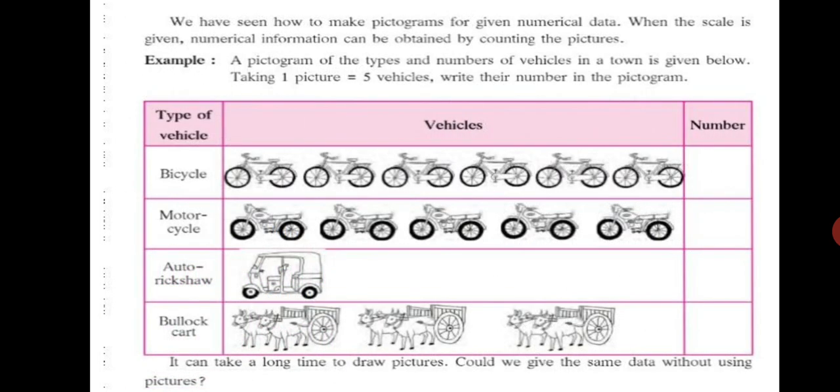We have seen how to make pictograms for given numerical data. Last year in 5th standard you had a lesson where you had to draw pictographs. When the scale is given, numerical information can be obtained by counting the pictures. Example, a pictogram of the types and numbers of vehicles in a town is given below. Taking one picture equals 5 vehicles, write their number in the pictogram. So, bicycle 1 stands for total 5 vehicles. So, like that each picture stands for 5 vehicles each.